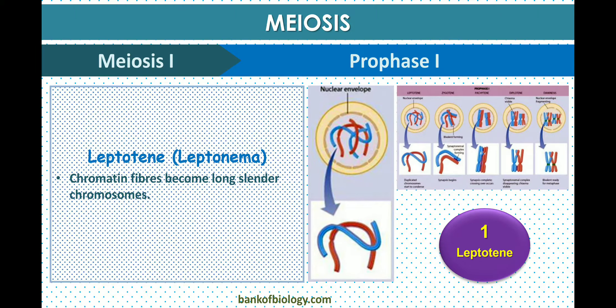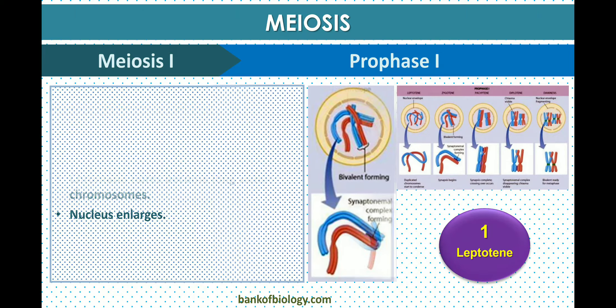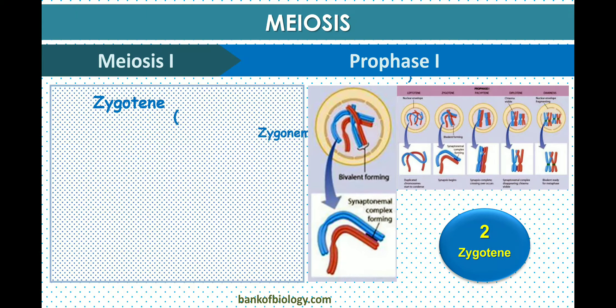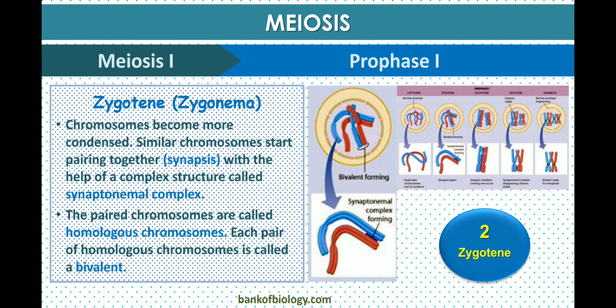The second sub-stage is zygotene, also called zygonema. In zygonema, chromosomes become more condensed and similar chromosomes start pairing together with the help of a complex structure called the synaptonemal complex. The paired chromosomes are called homologous chromosomes, and each pair is called a bivalent.